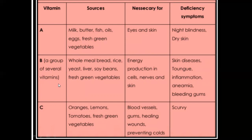Vitamin B is a group of several vitamins — that's why it's called B complex. Vitamin B6, B12, and many other types are present in whole meal bread, rice, yeast, liver, soybeans, and fresh green vegetables. Vitamin B is important for energy production in cells, and also for nerves and skin. Deficiency causes skin diseases, tongue inflammation, anemia, and bleeding.